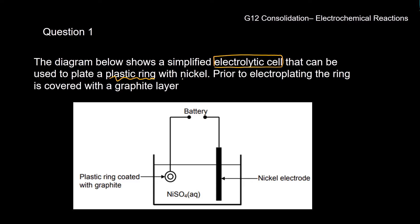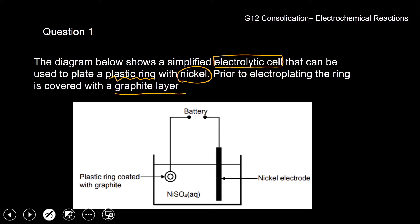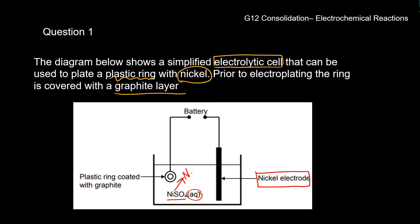We are plating a plastic ring with nickel. Prior to electroplating, the ring is covered in a graphite layer. We have a nickel electrode and an electrolyte which is nickel sulfate. Since nickel sulfate is in the aqueous state, it has dissociated in water and we get two ions: the Ni²⁺ ion and the sulfate ion, SO₄²⁻.